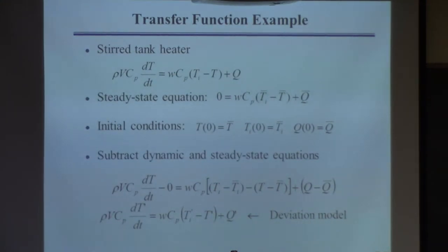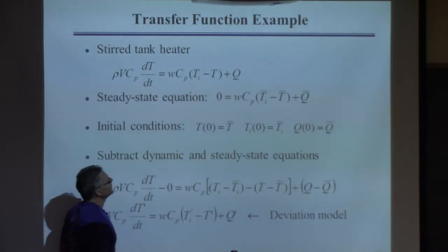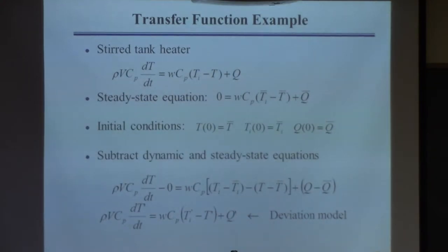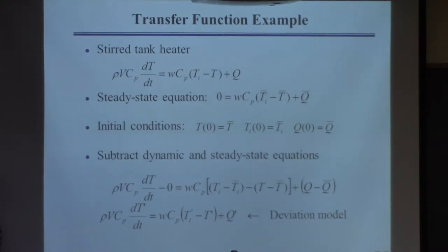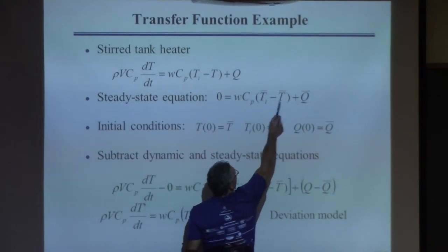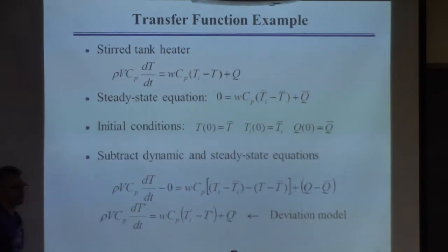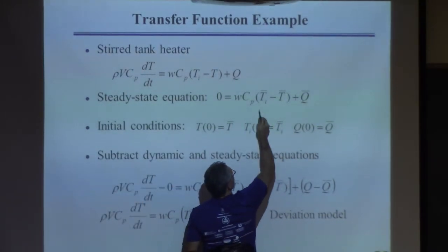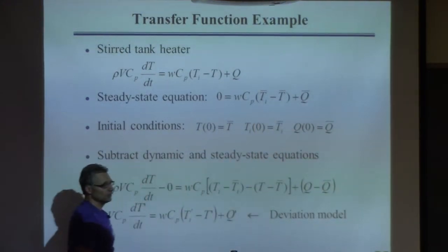For this equation, if you want to find a steady state, you set that derivative equal to zero and get this equation. The typical problem is that you would solve for the steady state value of the dependent variable T-bar. For you to find T-bar in that equation, I need to give you Ti-bar, Q-bar, W, and CP. I put bars above Ti and Q but not W because I'm assuming Ti and Q might change as a function of time — they might be inputs — while W remains constant and CP is a physical property.